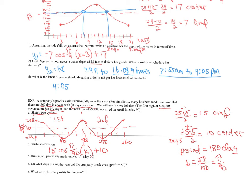It goes up 15 and down 15 from that center line. So how much profit is on the first 30 days? We plug x equals 30 into our equation and get y equals $17,500. And then on what days of the year does the company break even — profit of zero?